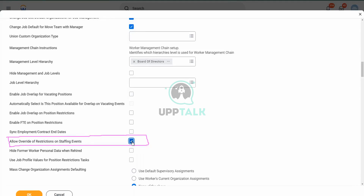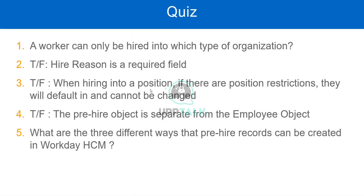So this option is important: Allow Override of Restrictions on Staffing Events. So the answer to this question — when hiring into a position, if there are position restrictions, they will default in and cannot be changed — the answer is: depending on the configuration. So it is true and false, depending on configuration.